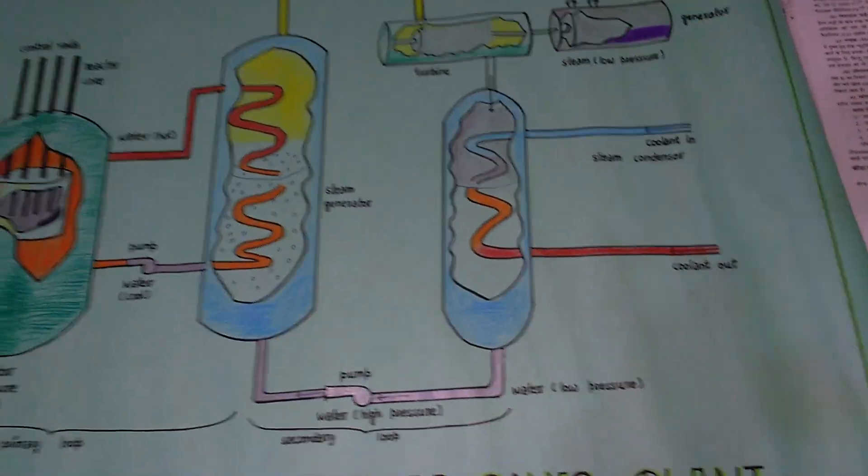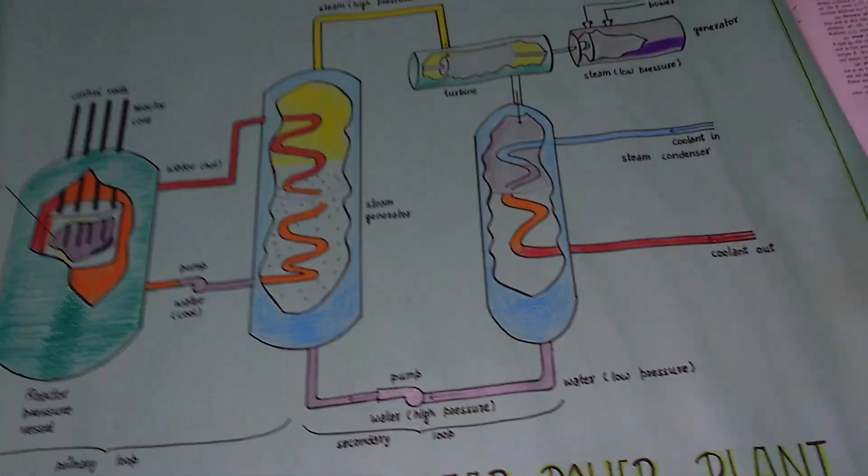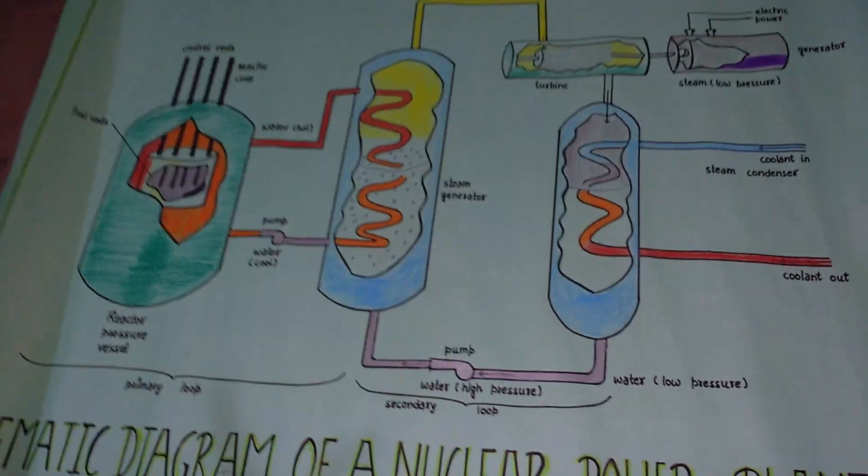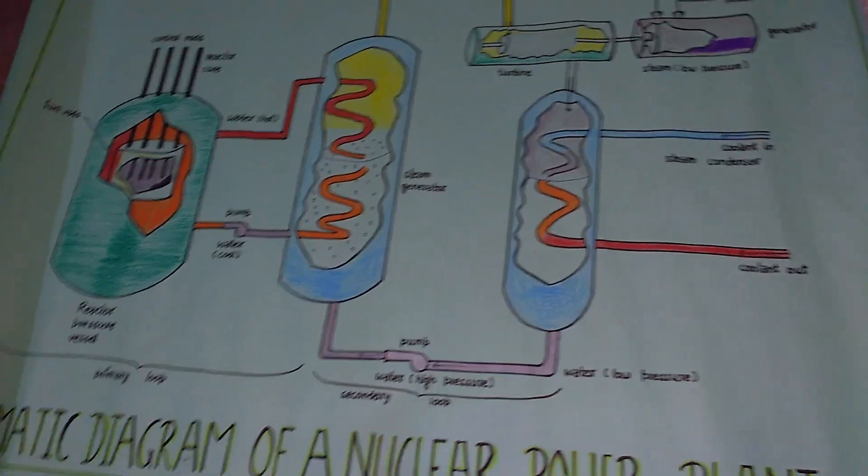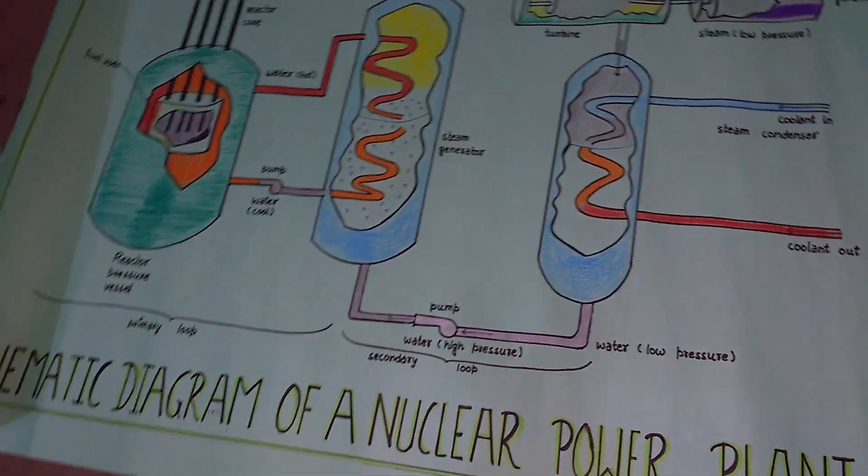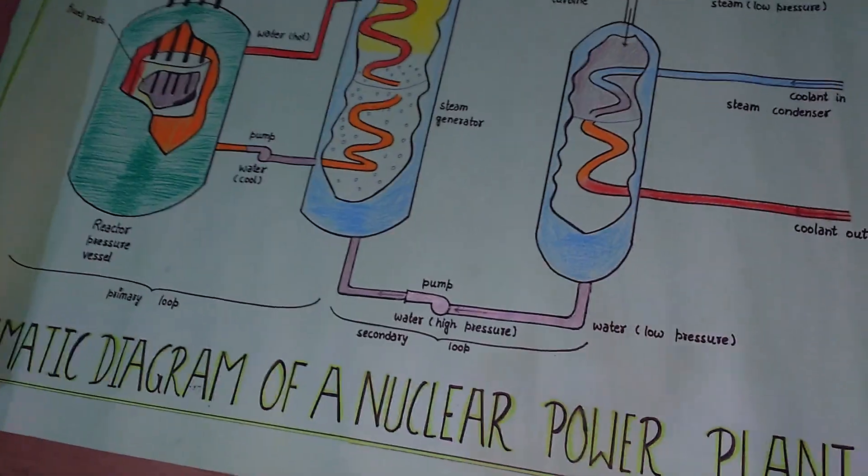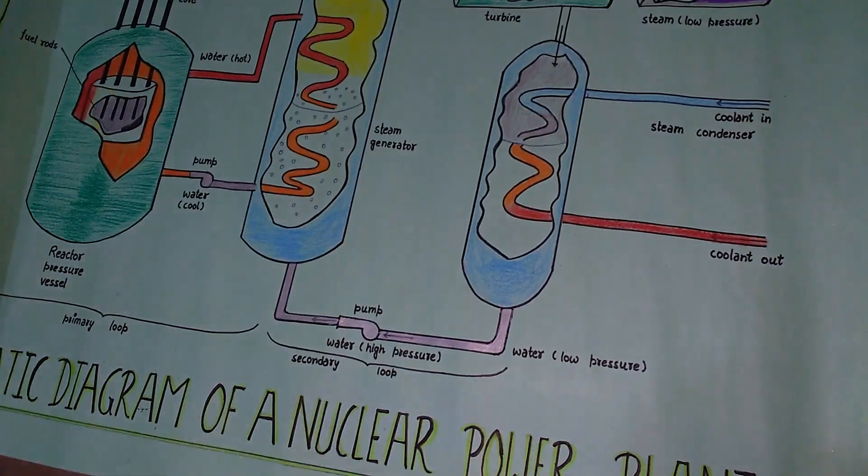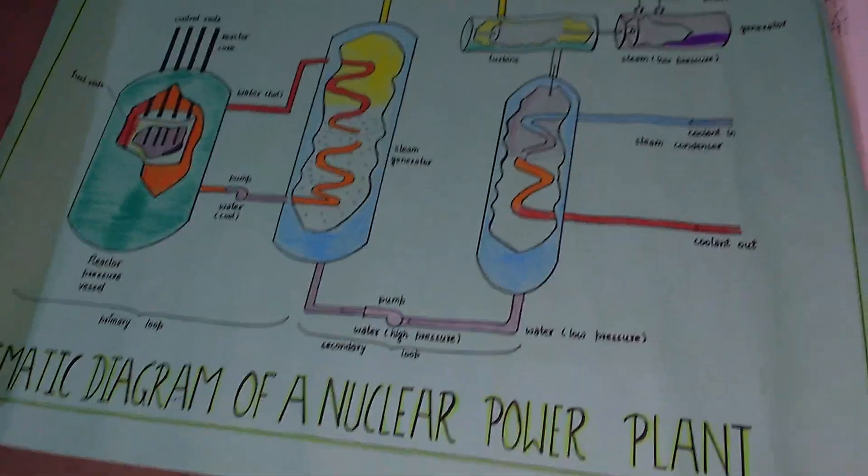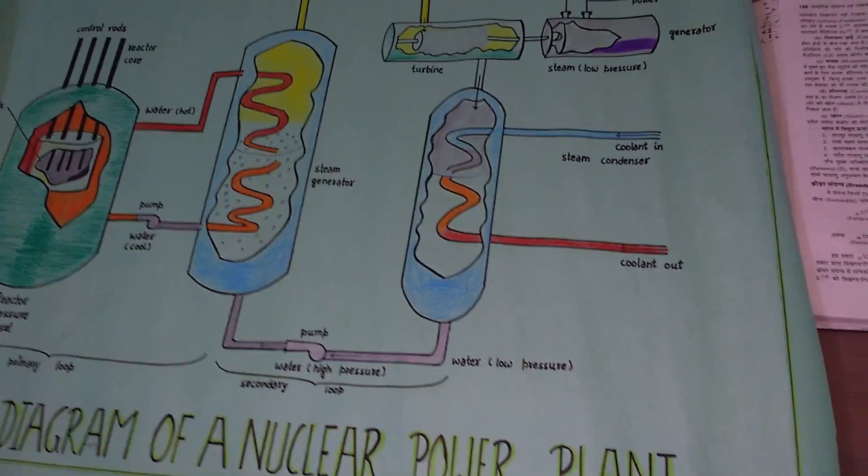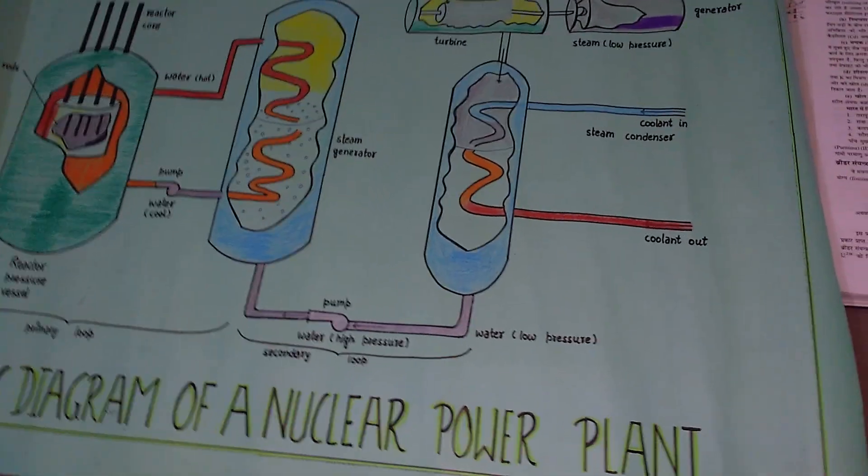In India, there are four nuclear reactors for electric power. The first is Tarapur Parmanu Urja Kendra, Maharashtra, 420 MW. The Raja Pratap Sagar Parmanu Urja Kendra, Kota, Rajasthan, 430 MW. Kalpakkam Parmanu Urja Kendra, Tamil Nadu, 470 MW. And Narora Parmanu Urja Kendra, UP, 440 MW. The five nuclear reactors are Apsara, Cyrus, Zarlina, Dhruva and Purnima at Bhabha Anusandhan Kendra, Trombay, Mumbai, Maharashtra.